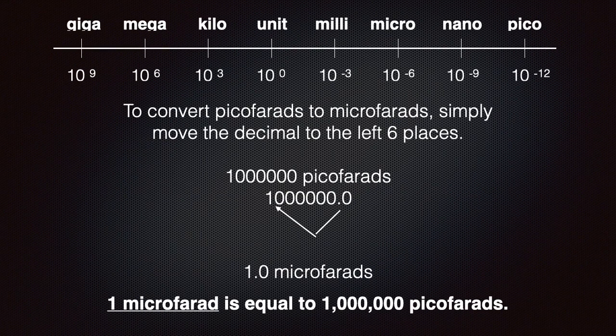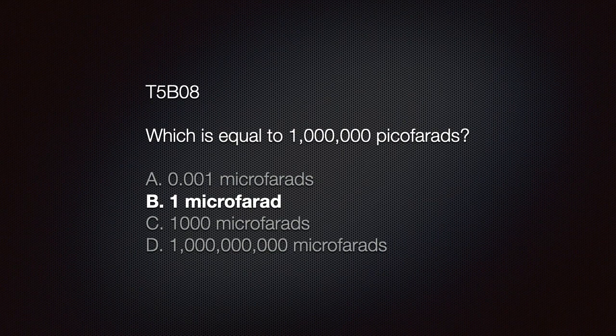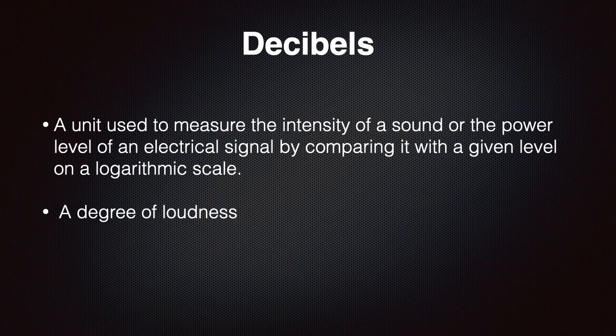Know that one microfarad is equal to one million picofarads. To convert picofarads to microfarads, simply move the decimal to the left six places. The exam question is: which is equal to one million picofarads? A) 0.01 microfarads, B) 1 microfarad, C) 1000 microfarads, or D) 1 billion microfarads. The correct answer is B, 1 microfarad.